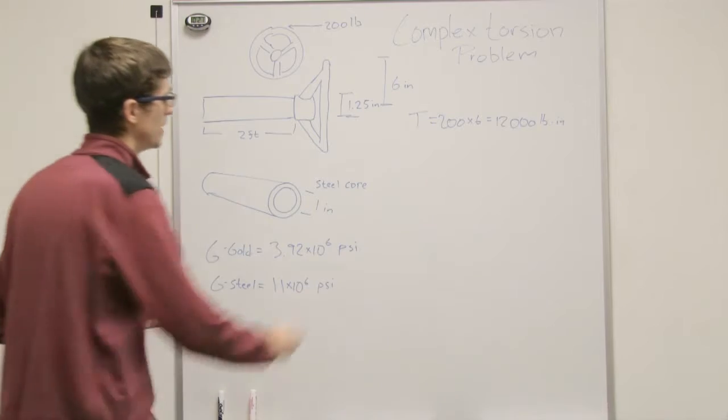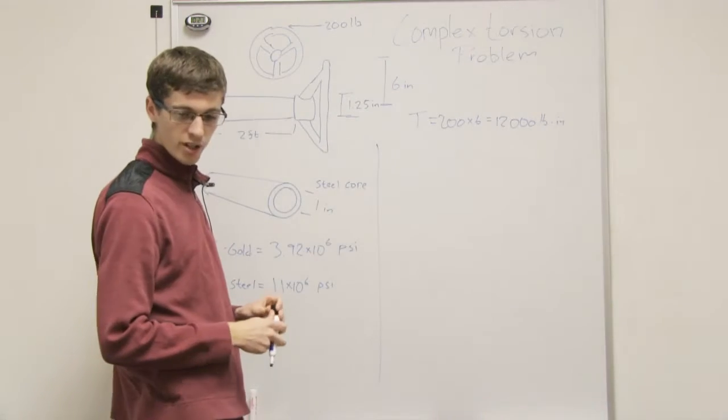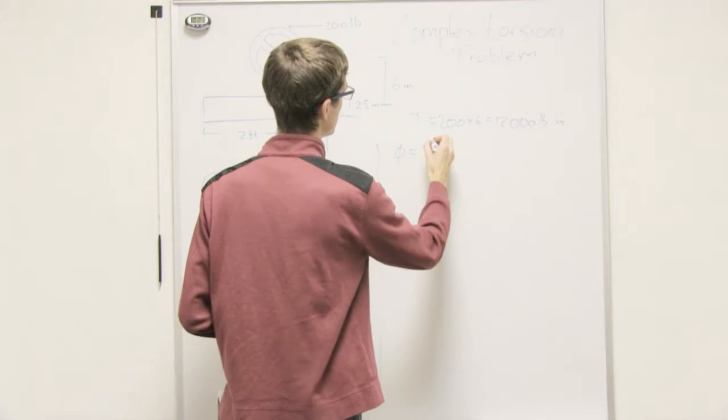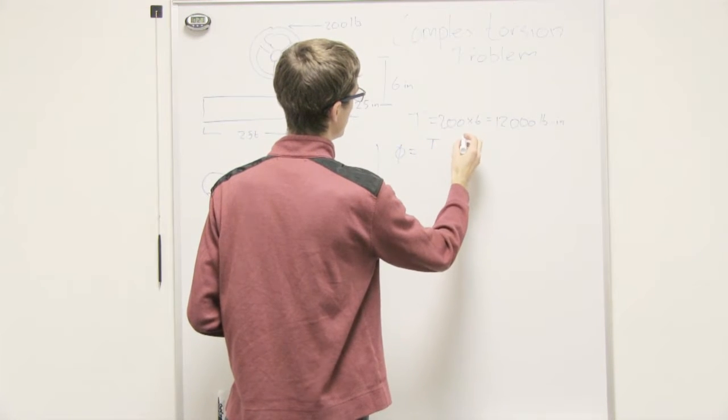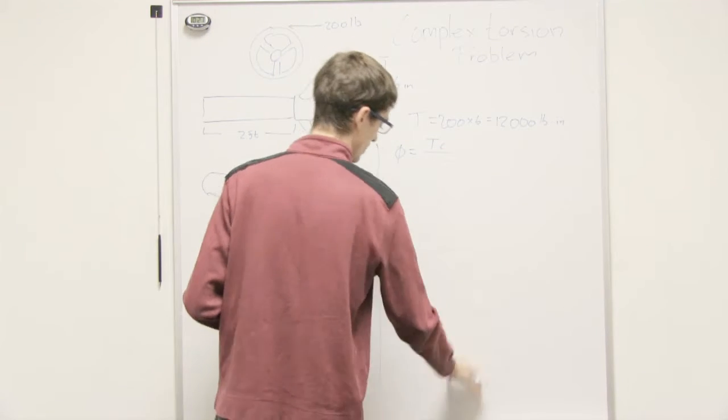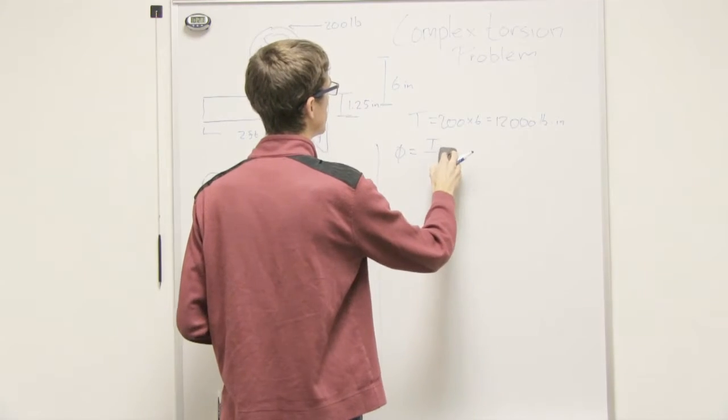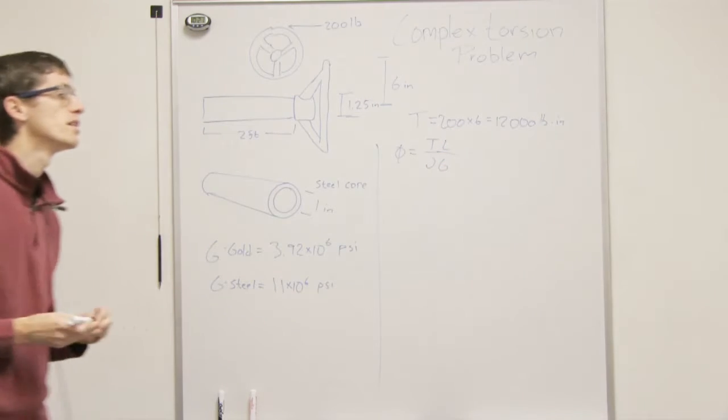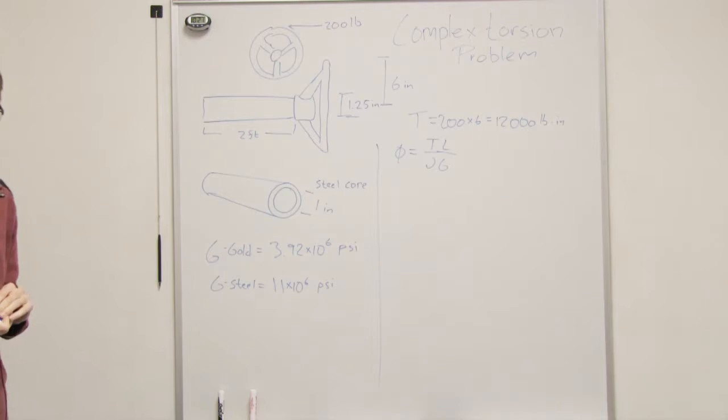Okay. Now, let's try solving for it. So the equation that we remember for angle of twist is, angle of twist is equal to T L over J G. That's right, that's our angle of twist equation.